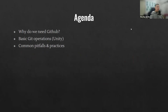So basically our agenda has three things: I'll explain why we need GitHub during our hackathon, cover some very basic GitHub operations based on a Unity project — though these operations are applicable to other game engines as well — and discuss some common pitfalls while merging updates among your team members.